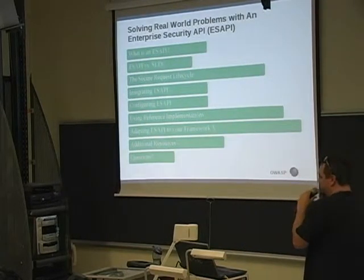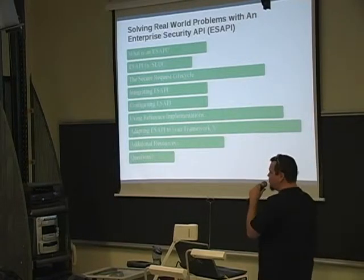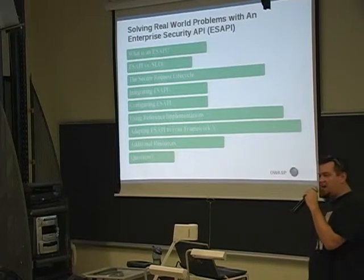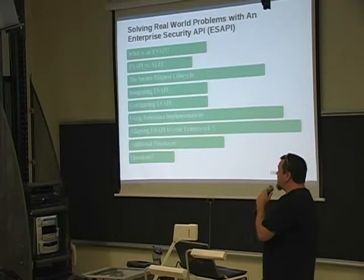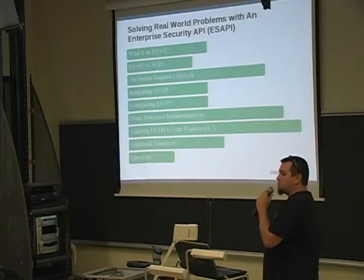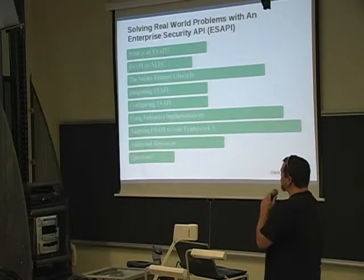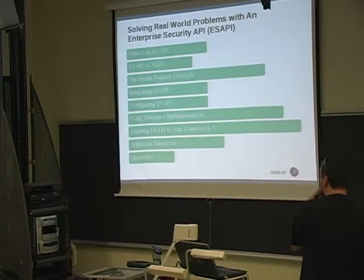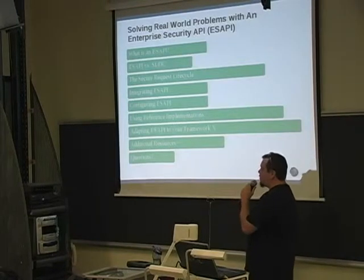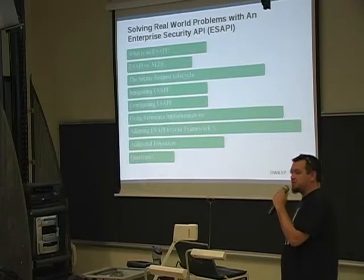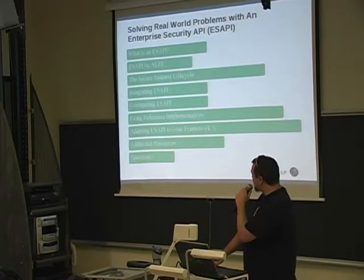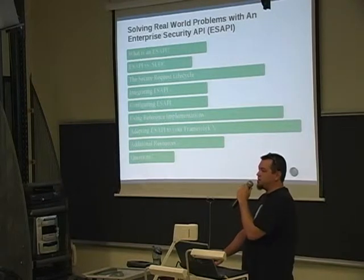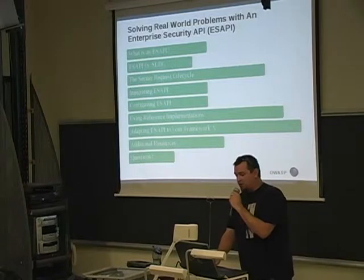Here are some of the things I'm going to go over. First, it's pretty important to define what exactly an ESAPI is — and you'll notice I'm saying 'an ESAPI,' not 'the ESAPI.' I'm also going to go over where it fits into your software development lifecycle and what a secure request lifecycle should look like. Then we'll get into some coding demos, and I'll show you how to integrate an ESAPI into your project, configure it, use the reference implementations we provide, or adapt existing API calls into your existing security libraries — Framework X, which could be Spring Security, JAZ, or a number of security toolkits that are available.